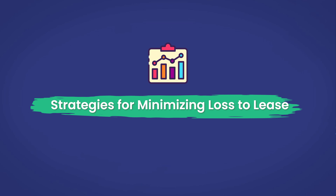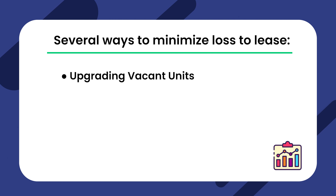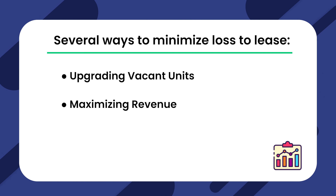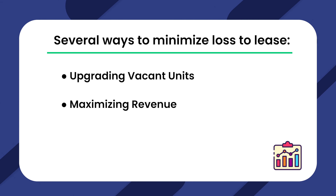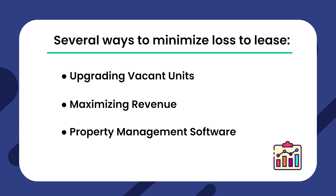There are several ways to minimize loss-to-lease. They include upgrading vacant units, improving unit interiors or adding amenities to command higher rents, maximizing revenue by offering optional services, renting out communal spaces, managing overhead costs, and using property management software tools like DoorLoop to stay informed and make data-driven decisions.